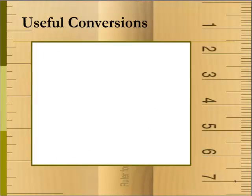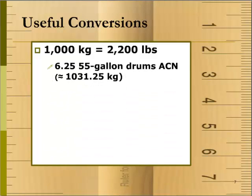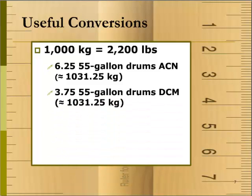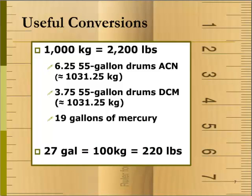For a little clarity and a visual approximation of volumes, here are some helpful conversions. 1,000 kg is about equal to 2,200 pounds, or 6 and a quarter 55-gallon drums. 1,000 kg is just about 3 and three-quarters 55-gallon drums, or 206 gallons of dichloromethane. 1,000 kg is about 19 gallons of mercury. 6,000 kg is about 2,007 gallons of acetonitrile, or about 1,584 gallons of water.